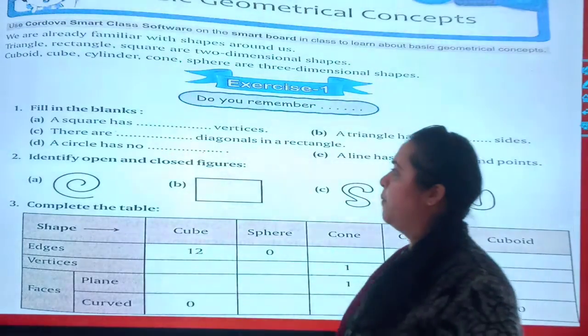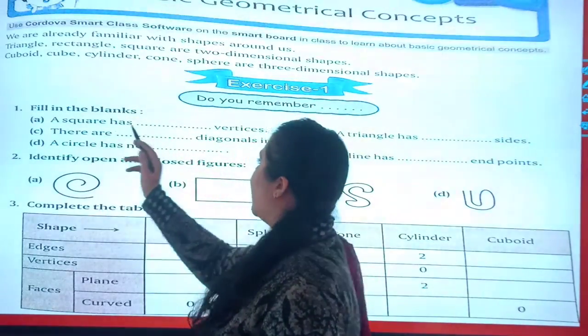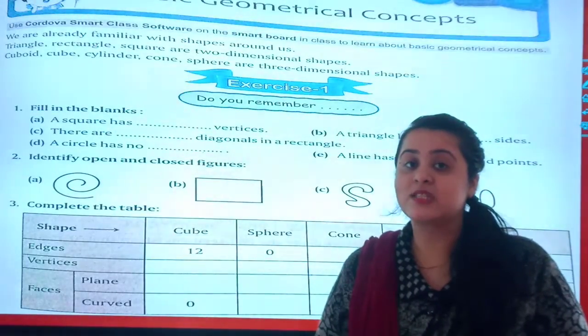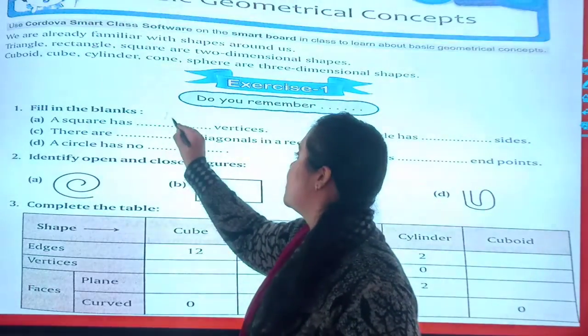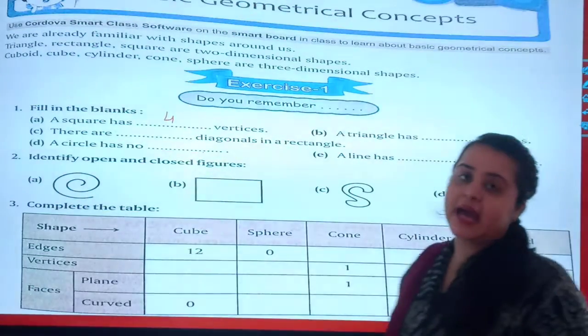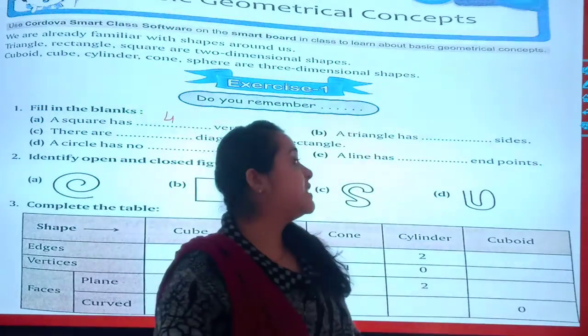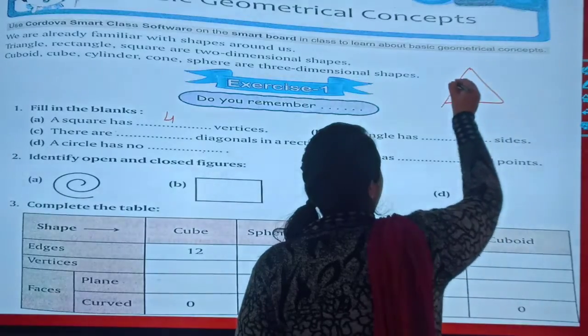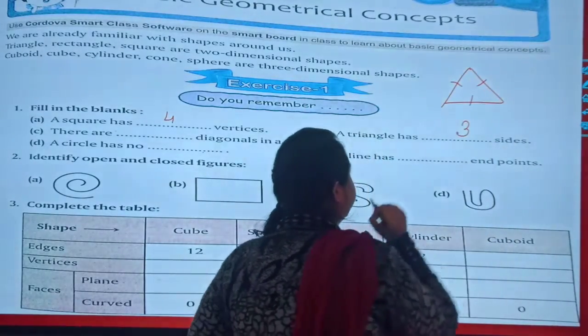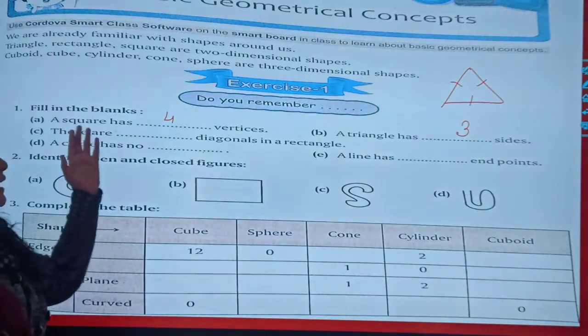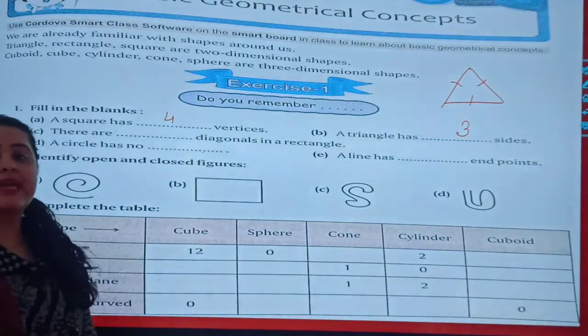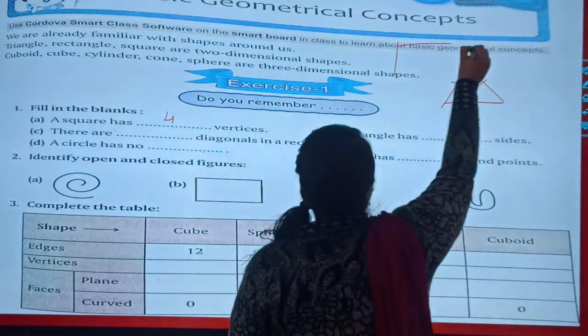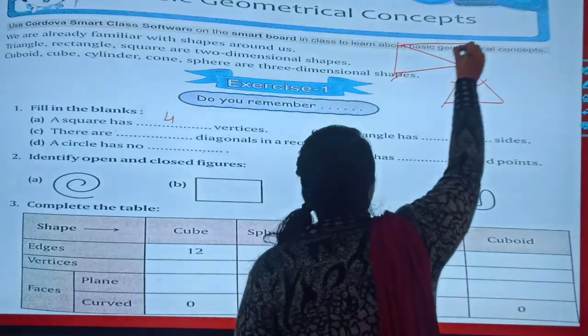Fill in the blanks. First one. A square has dash vertices. How many vertices are there in square? Four. Very good students. A triangle has dash sides. How many sides does the triangle have? One, two, and three. There are dash diagonals in a rectangle. This is your rectangle. One diagonal and second diagonal. So there are two diagonals in a rectangle.